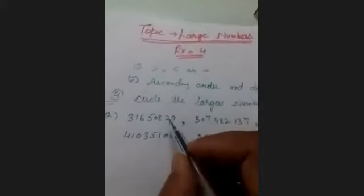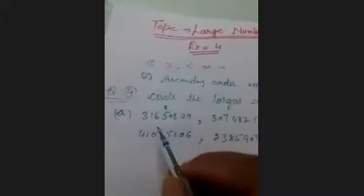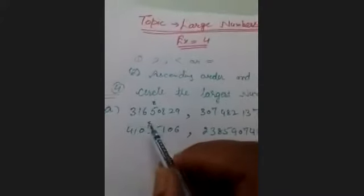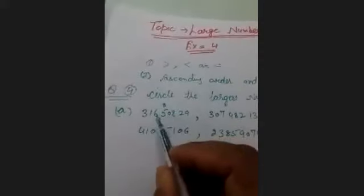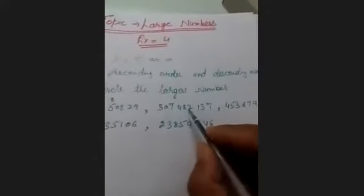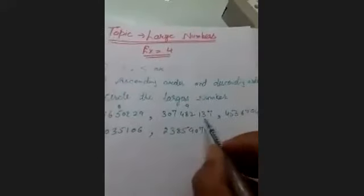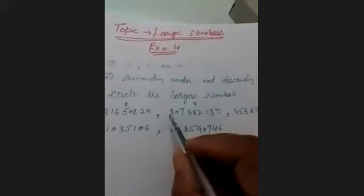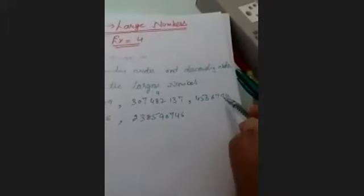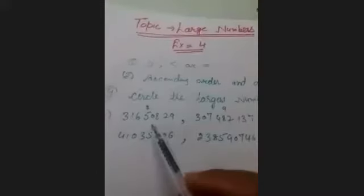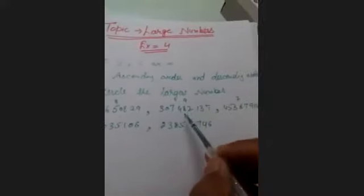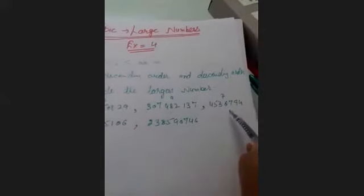The first number has 2, 4, 6, 8 digits — it is an eight-digit number. The second number has 2, 4, 6, 8, and 9 digits — it is a nine-digit number. The next has 2, 4, 6, and 7 — it is a seven-digit number. The first number is an eight-digit number and the third number is a seven-digit number.